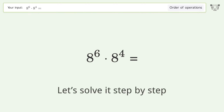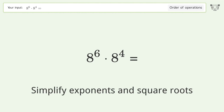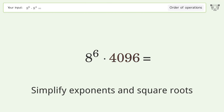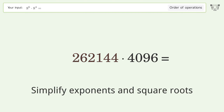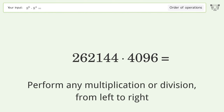Let's solve it step by step. Simplify exponents and square roots: 8 to the power of 4 equals 4,096. 8 to the power of 6 equals 262,144. Then perform any multiplication or division from left to right.